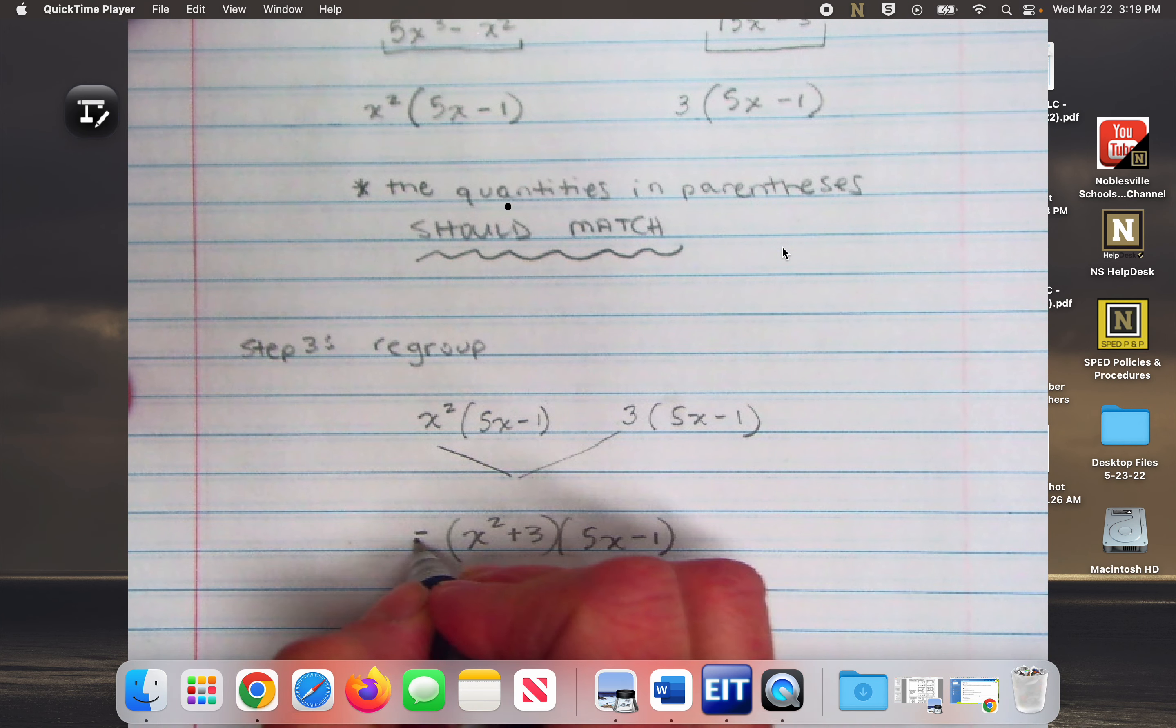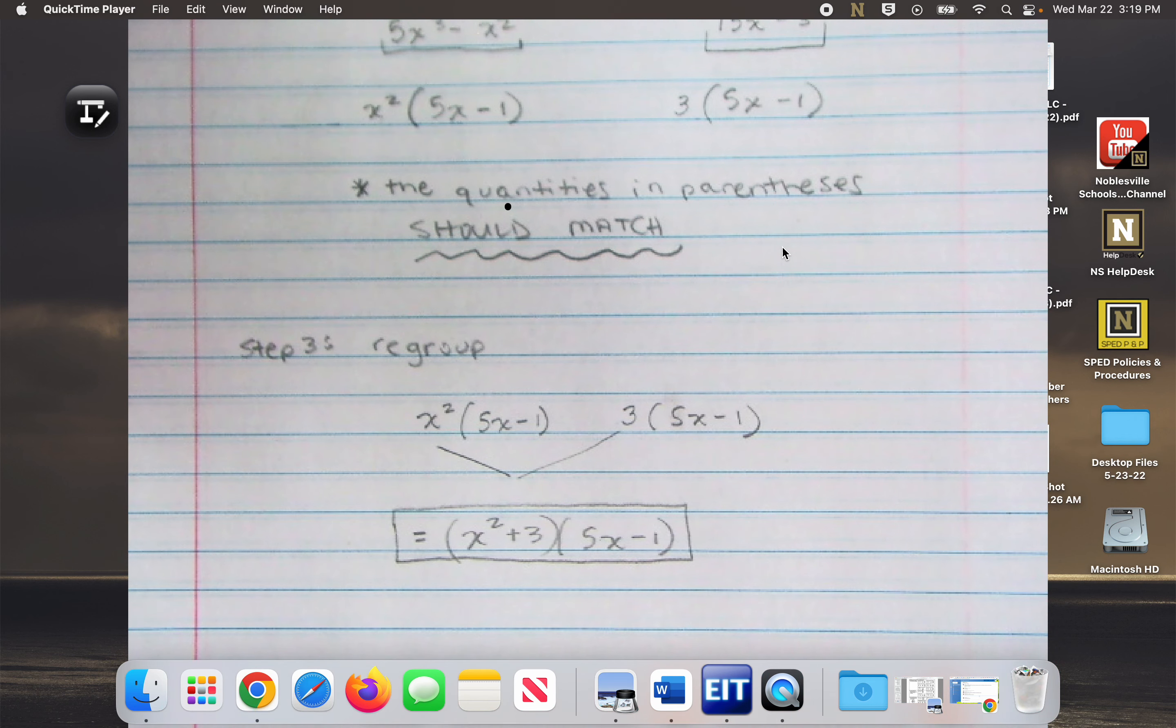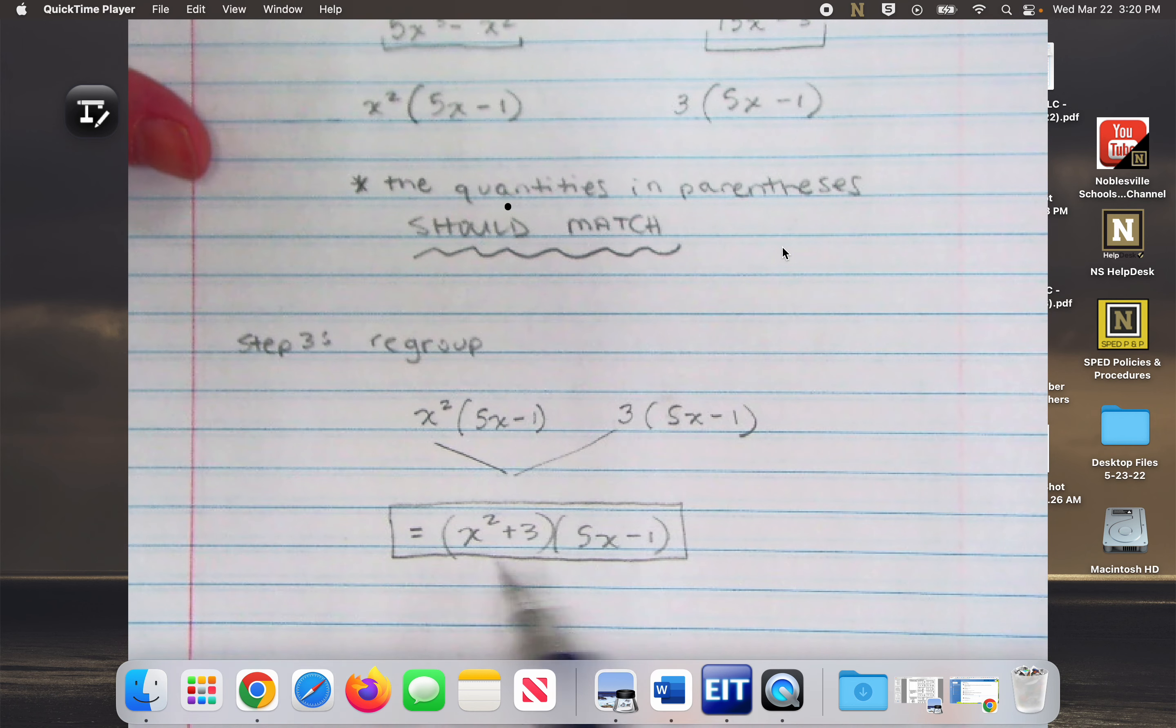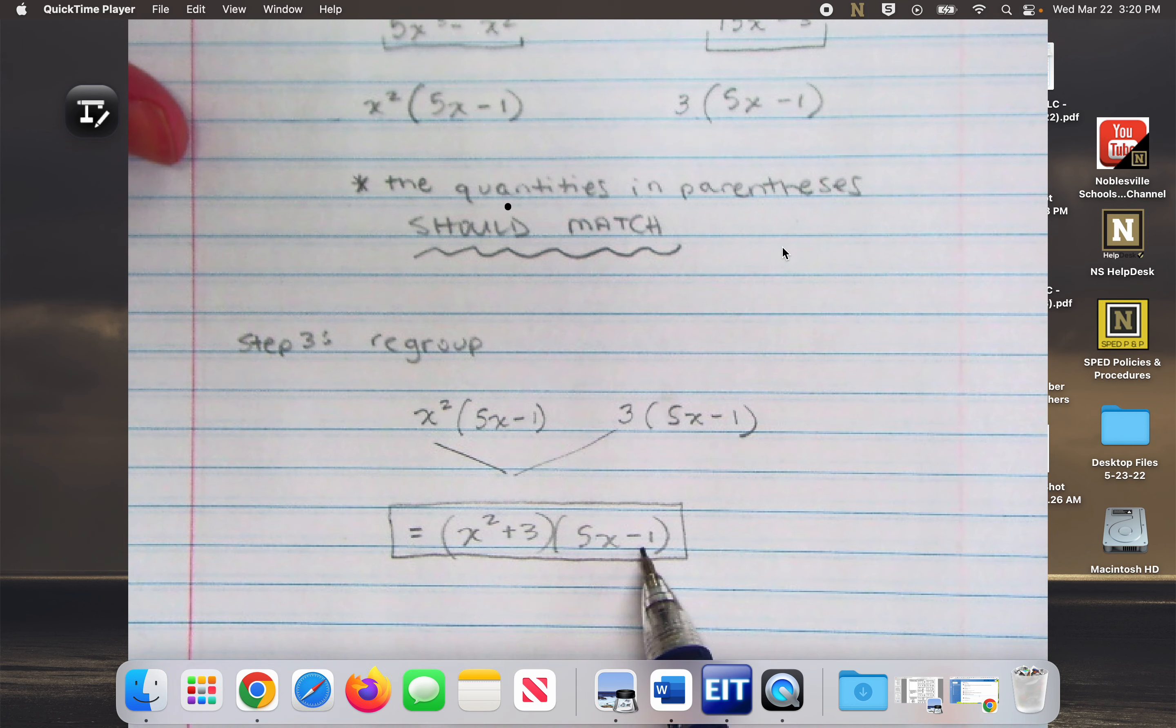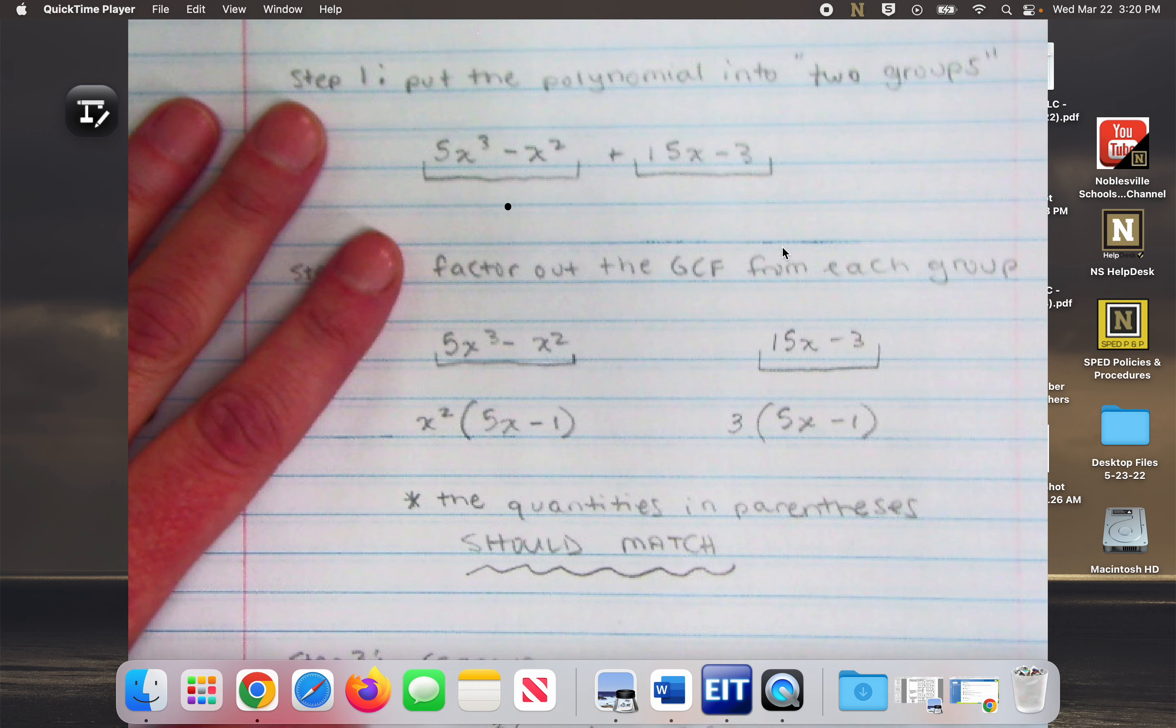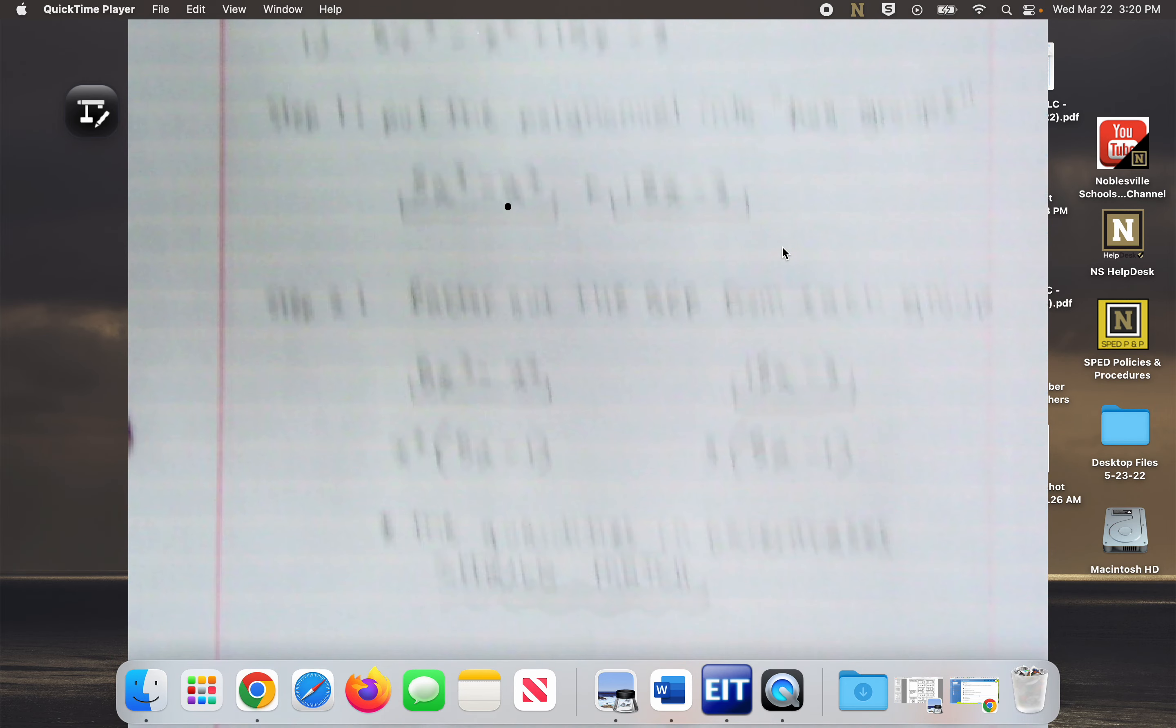And that will be my answer. How can I check this? I could foil it. So 5x times x squared would give me 5x to the third. That's first. Outer, x squared times negative one would give me negative x squared. Inner I would get 15x and last would be negative three. So when you foil it you want to get back to where you started, the original polynomial.